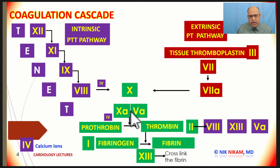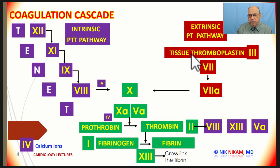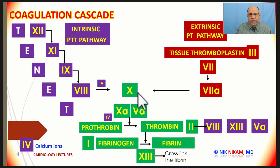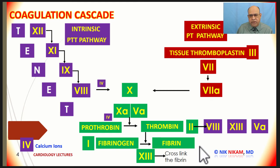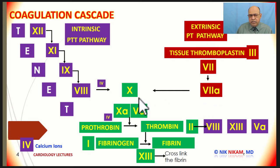Factor 9a acts on factor 8 along with calcium ions, and acts on factor 10, converting it into factor 10a. This 10a along with calcium and cofactor then acts on prothrombin. On the extrinsic pathway, which is a shorter pathway, tissue thromboplastin (factor 3) acts on factor 7 and converts it into factor 7a. Factor 7a acts on factor 10 and converts it into factor 10a, which goes through the common pathway forming the fibrin network. The efficiency of the intrinsic pathway is measured by PTT or partial thromboplastin time, whereas the extrinsic pathway is measured by prothrombin time.